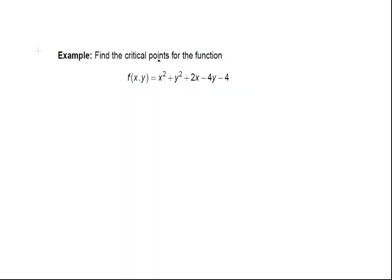Find the critical points for the function as follows: f(x,y) = x² + y² + 2x - 4y - 4. This is a simple enough one just to get started.